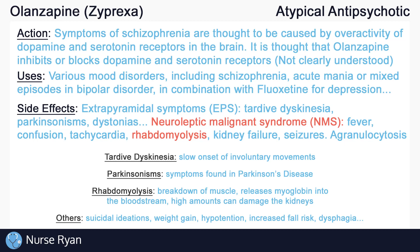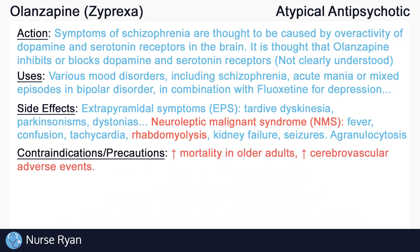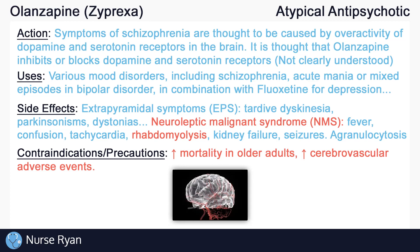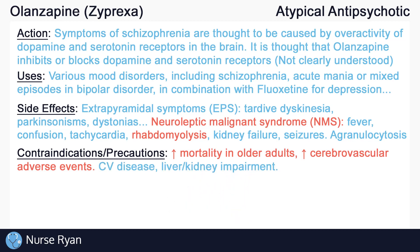It is always important to be aware of the black box warnings for olanzapine. One of which is that olanzapine may be associated with increased mortality in older adults with dementia-related psychosis. Olanzapine may increase the risk of cerebrovascular adverse events, such as strokes or TIAs, in geriatric clients. Exercise caution in patients with cardiovascular disease, liver impairment, and kidney impairment, which are all more common in elderly patients. These patients may require decreased doses of olanzapine.